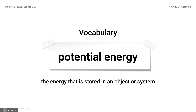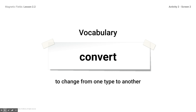As a refresher: potential energy is the energy stored in an object or system. It can be in the form of chemical energy, or it can be stored gravitationally — where an object is up high and gravity is pulling on it. Once it rolls, falls, or is pushed, that potential energy converts into kinetic energy. When we say 'convert' in science, we mean it's changing from one type to another — from potential to kinetic, or from kinetic back to potential.